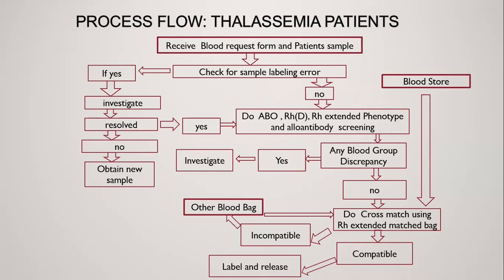Now let us see the process flow of the advanced red cell serology section for thalassemia patients. We receive the blood request form and patient sample, check for labeling error, and if there is none, ABO grouping, Rh typing, Rh extended phenotype, and allo antibody screening is done. If there is no blood group discrepancy due to allo or auto antibody, we do cross-matching using an Rh extended matched bag, and if compatible, the blood is released.